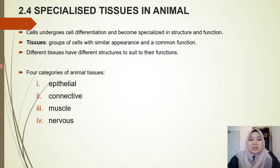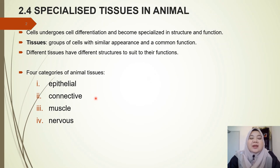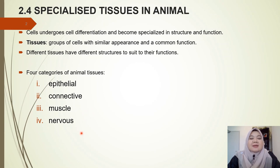By definition, tissues are the group of cells with similar appearance and a common function. Different tissues would have different structures to suit their functions. In animal tissues, we have four categories: epithelial, connective, muscle, and nervous.